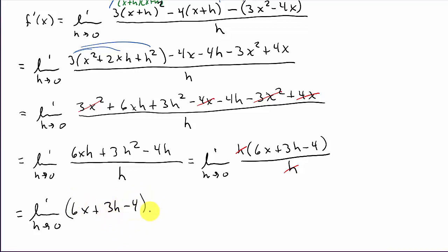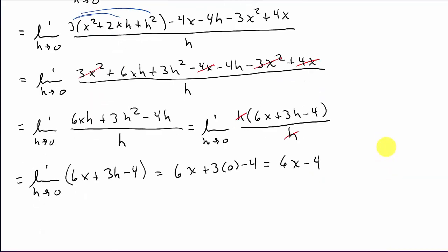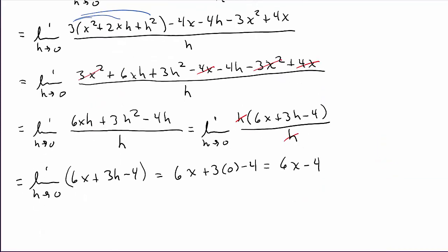Now I can evaluate the limit. This gives me the limit as h goes to 0 of 6x plus 3h minus 4. Plugging in 0 for h: 6x plus 3 times 0 minus 4, which is 6x minus 4. So our derivative, f prime of x, is equal to 6x minus 4.